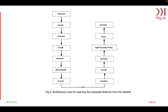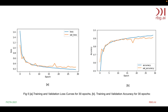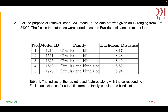This is the architecture we used for learning the extracted features from the dataset. These are the training and validation accuracy and the loss curves for 30 epochs. With the new model, feature retrieval was performed with test files from different families. The files in the database were sorted based on Euclidean distance between the features of the test file. In the table, we can see the indices of the top retrieved features along with the corresponding Euclidean distances for a test file from the family circular and blind slot.